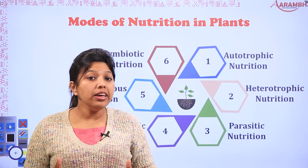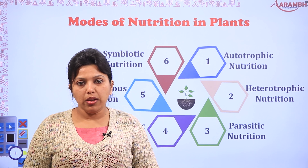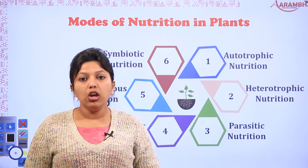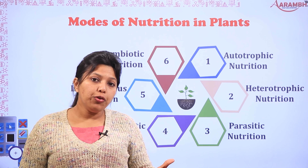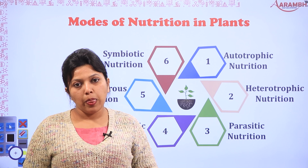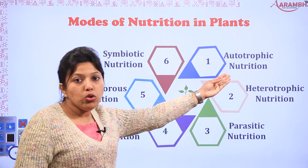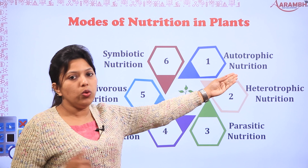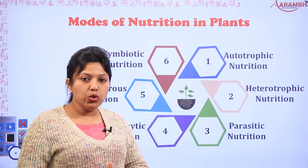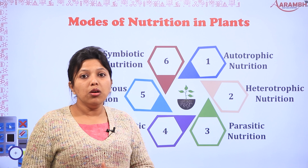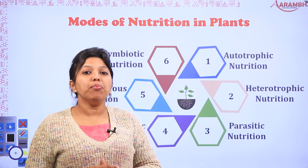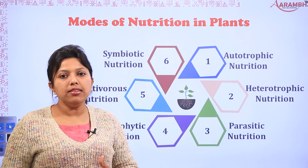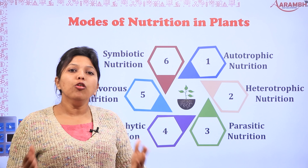When we want to understand nutrition in plants, there are specifically two types: autotrophic and heterotrophic. Autotrophic nutrition means all those plants that fulfill their own food needs by preparing their own food.